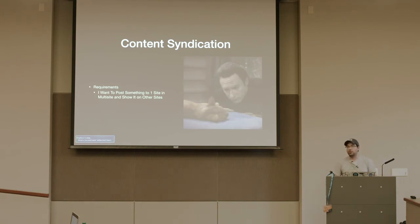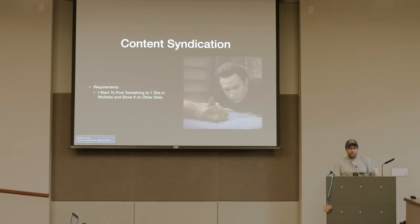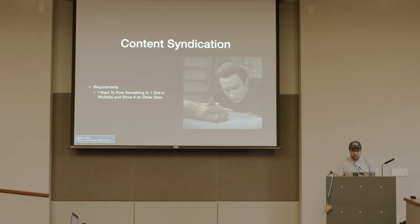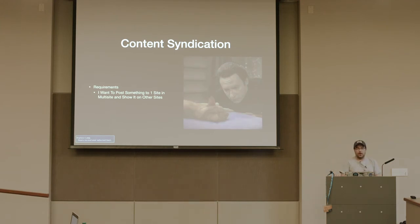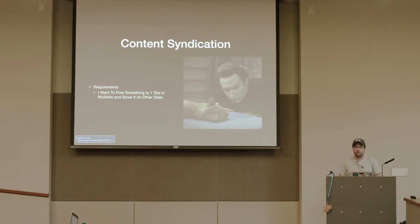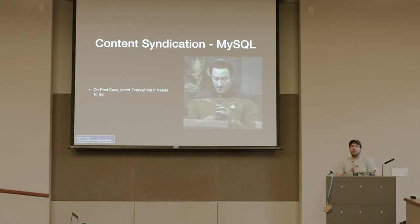The last real-world example I want to talk about is content syndication. This is one of those things I've done three or four different ways, and it really comes down to what the client means when they say content syndication. There's a lot to consider from an SEO perspective — like duplicate content — but we're not going to dig into that here. If you're syndicating content — meaning taking something posted on one site and using it on multiple other sites, a hub and spoke model — you could just say on all the spoke sites, let's consume an RSS feed or something. But let's see if there are better options that don't require so many remote requests.